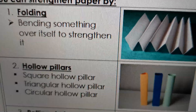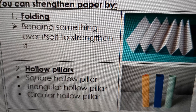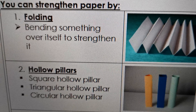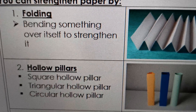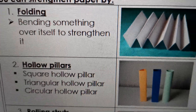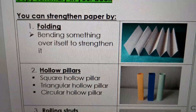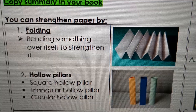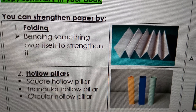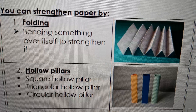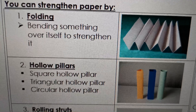Then we have hollow pillars. We get a square one, a triangular one, and a circular one. We are going to do an experiment where we test which one of the three will be stronger - will it be the hollow square, the triangular, or the circular one? Start thinking: which one do you think will be stronger?